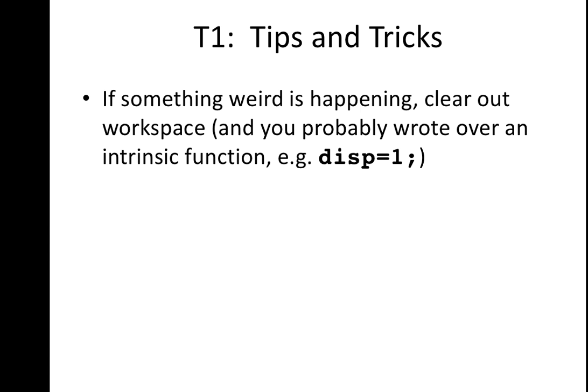It won't tell you, oh, you overwrote the intrinsic function. Typically what it says is it says that you're trying to access an index that doesn't exist in the disp function, because you're trying to put a string into the disp function, which is now just one, and so it's trying to access some string value of one. So it's a very confusing error message.